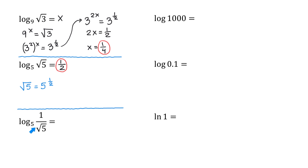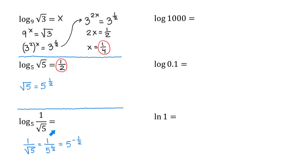Next, we will evaluate log base 5 of 1 over square root of 5. We know that square root of 5 is the same as 5 to the exponent 1 half. Then, 1 over square root of 5 is the same as 1 over 5 to the exponent 1 half. If we move this 5 up to the numerator, this exponent will be negative. So, this expression will be equal to 5 to the exponent negative 1 half. Then, the value of this logarithm is negative 1 half.